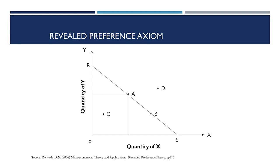If any other basket below the budget line, say basket C, is a smaller and cheaper basket of commodity X and Y, then revealed preference theory relies on these observed choices in the market. If the cost associated with point C is unknown or not observed, it is very challenging to make a definite conclusion about the ranking relative to point A. Any other point above the budget line, say basket D, is larger and more expensive than the basket represented by point A.